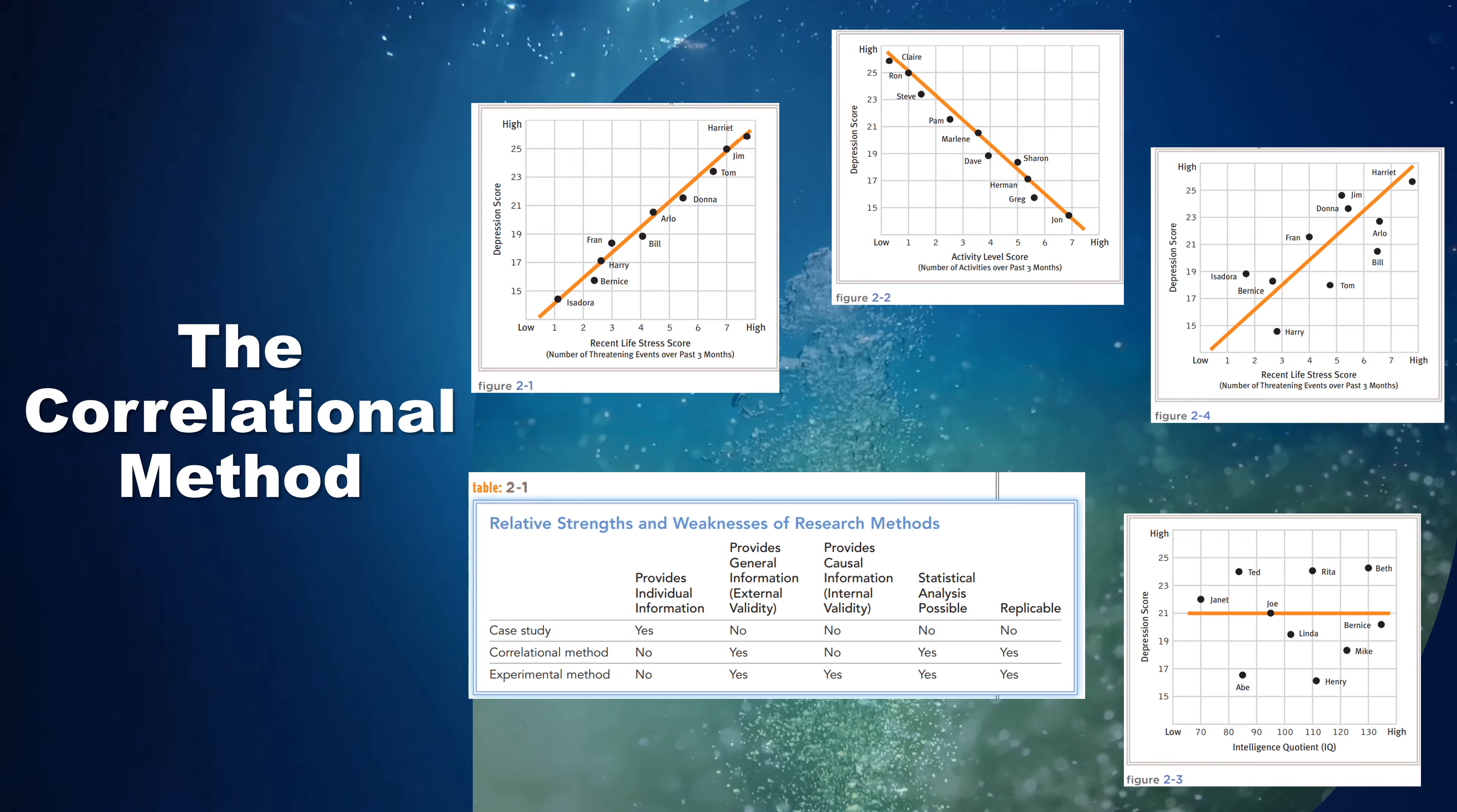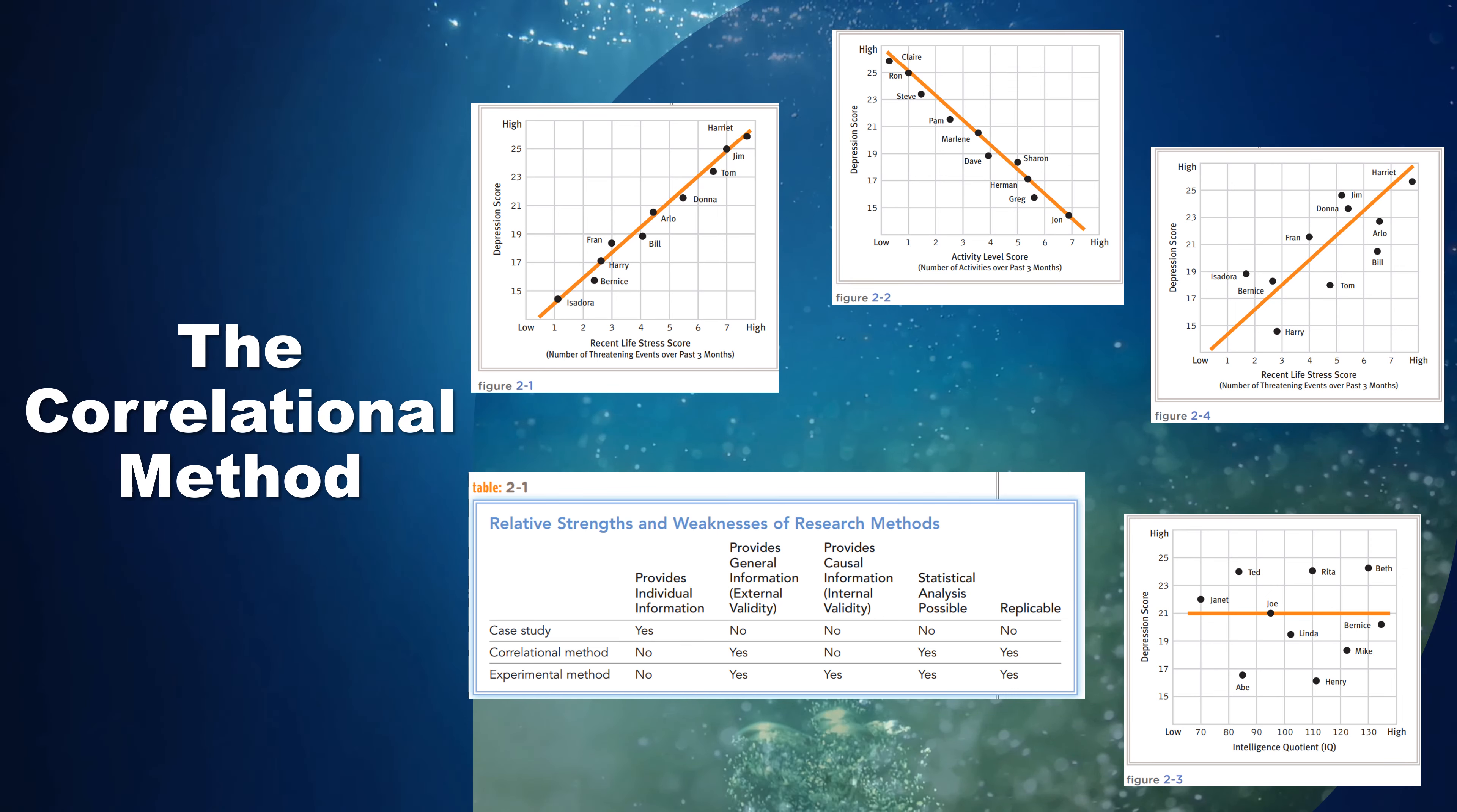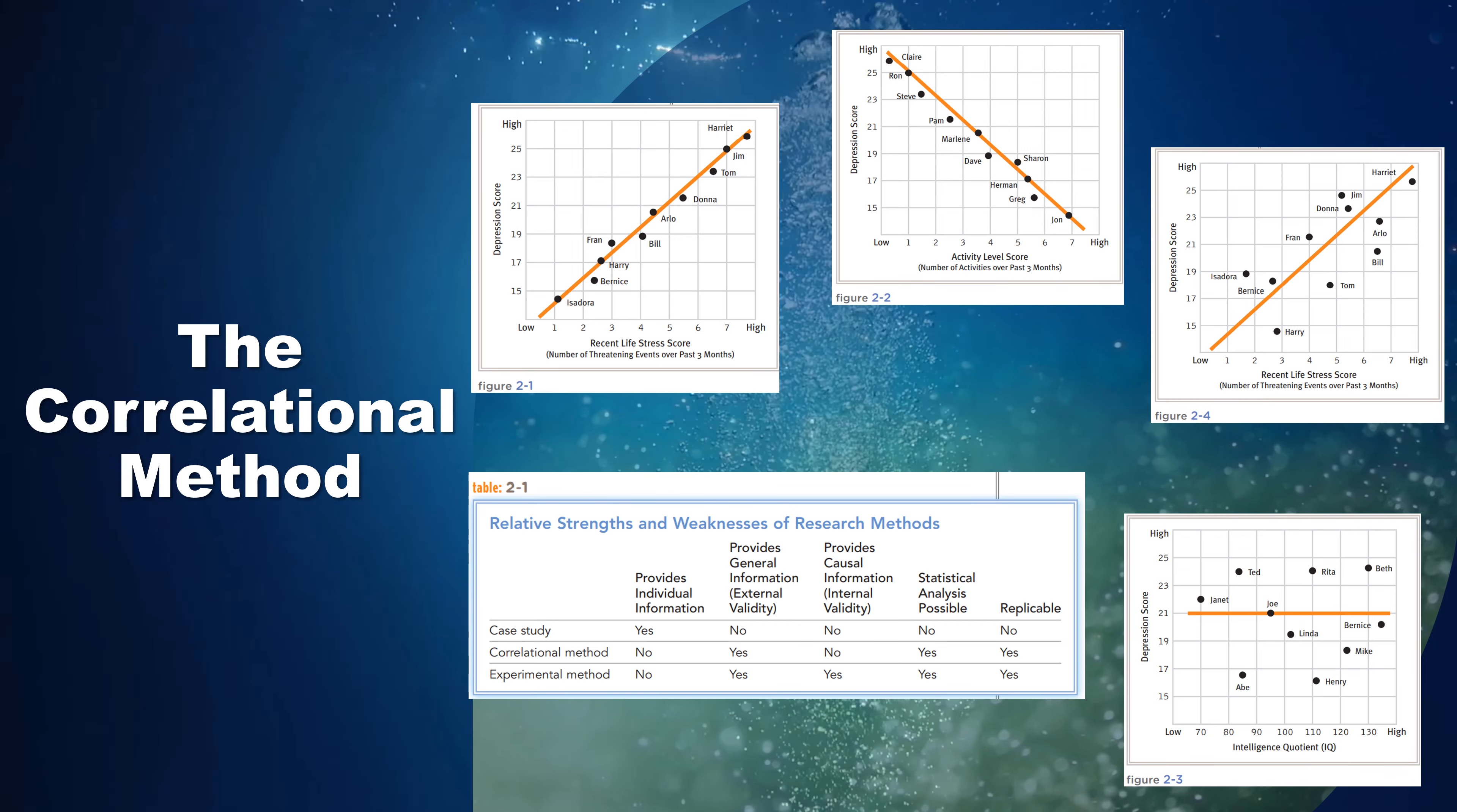An R of 0.00 reflects a zero correlation, or no relationship between variables. The closer R is to 0.00, the weaker, or lower in magnitude, the correlation. Thus correlations of +0.75 and -0.75 are of equal magnitude and equally strong, whereas a correlation of +0.25 is weaker than either.